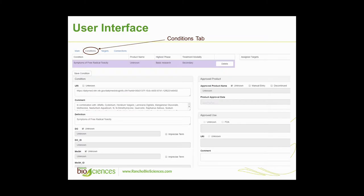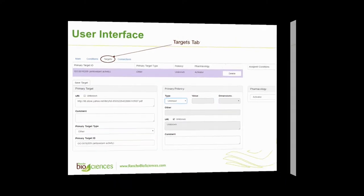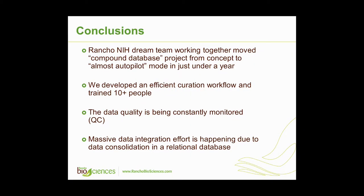There is a tab about conditions — what compounds treat. Wherever possible, we leverage ontologies. On the back end, we're running a CyGraph application, which allows information entry in a consistent way so there's no way someone can mistype or corrupt data. If you're talking about asthma, everyone knows it's that asthma and nothing else, and all IDs are captured as well. The same applies for the targets tab.